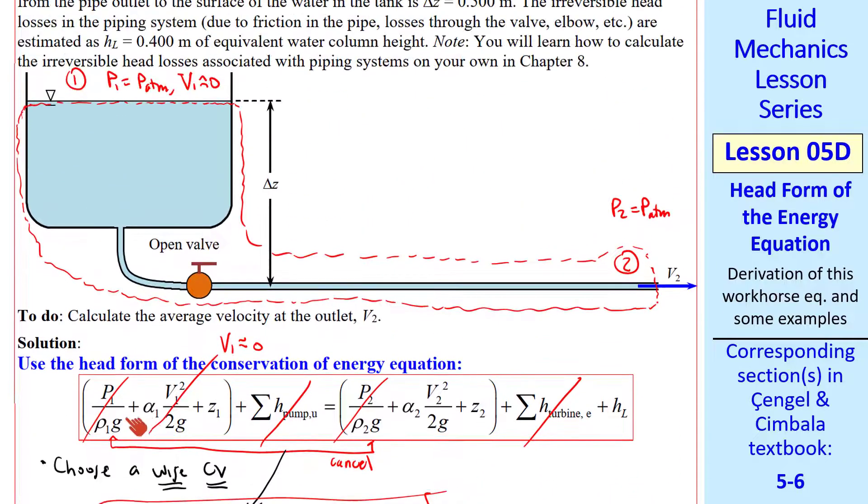One quick comment. We're using a steady form of this energy equation. Some of you may say, well, this is not a steady problem, because this tank is draining with time, so delta z is changing. That's true, but this is happening very slowly if this is a large tank. In engineering, we call that quasi-steady. This equation can still be used at any instant in time. If you wait a long time and the tank is, say, half the height, you can redo the analysis with that different water height in a quasi-steady fashion.